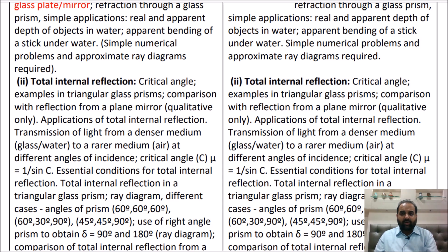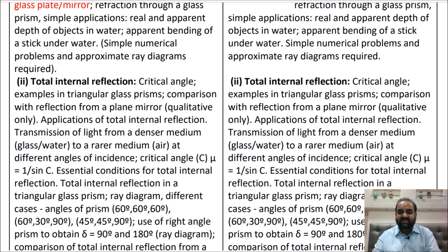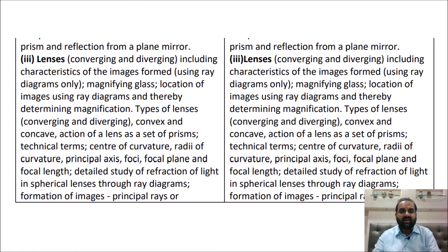The rest — prism, B part, C part, real depth and apparent depth — are all there, and numericals can be asked. Applications of refraction of light are included. TIR (Total Internal Reflection) is very important; do not miss it. Study how TIR takes place in different types of prisms — that entire part is very much there.